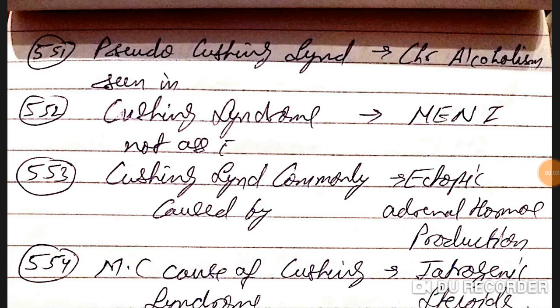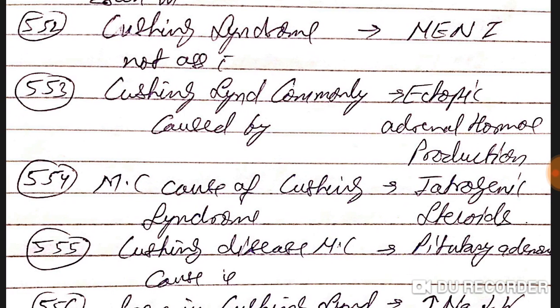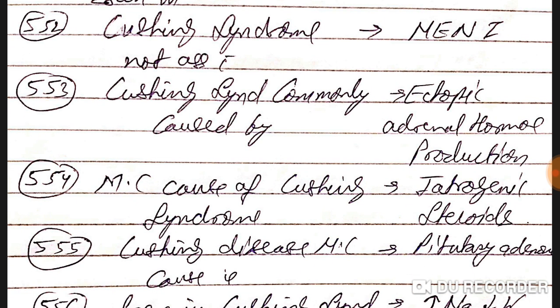Good evening doctors, welcome again. Today we are going to discuss NEET PG 2020 important one-liners, this is part 56. Pseudo-Cushing syndrome is seen in chronic alcoholism. Cushing syndrome is not associated with it.